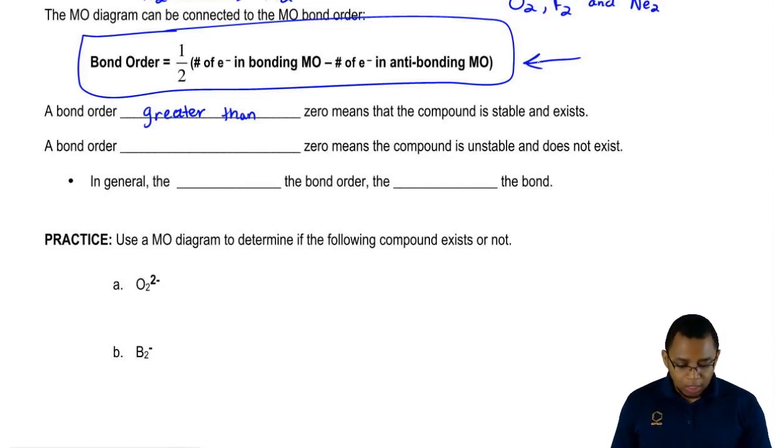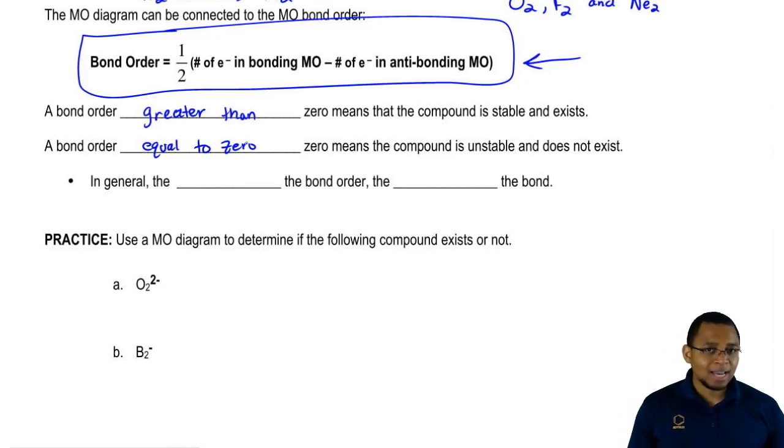If we get a bond order equal to zero, then that means the compound is unstable and it does not exist in reality.